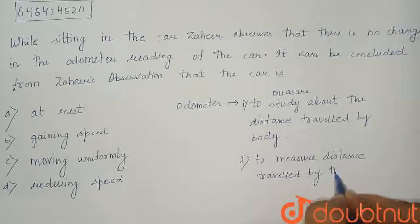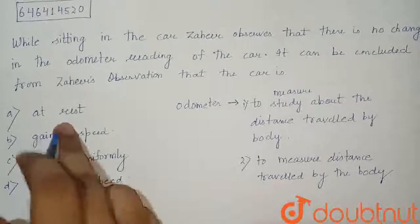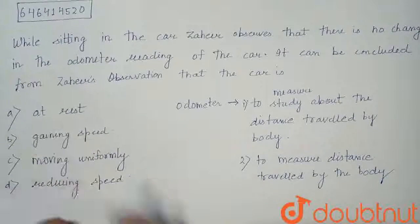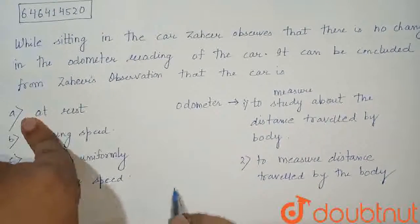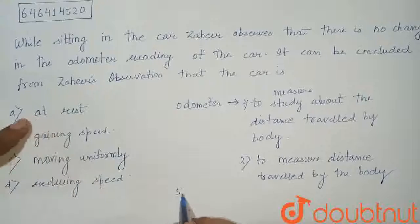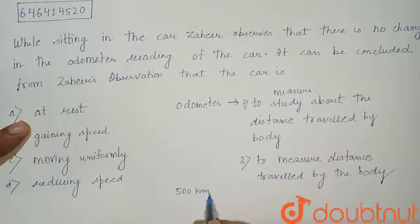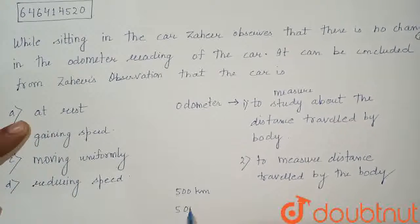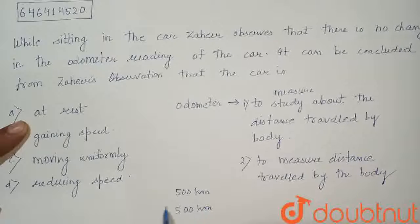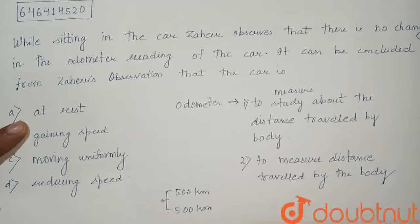Now we can see the options. Let's suppose that if we have 500 kilometers, a few days later we can see it again. The odometer measures distance traveled — so if there is no change in the odometer reading, the car is moving uniformly.